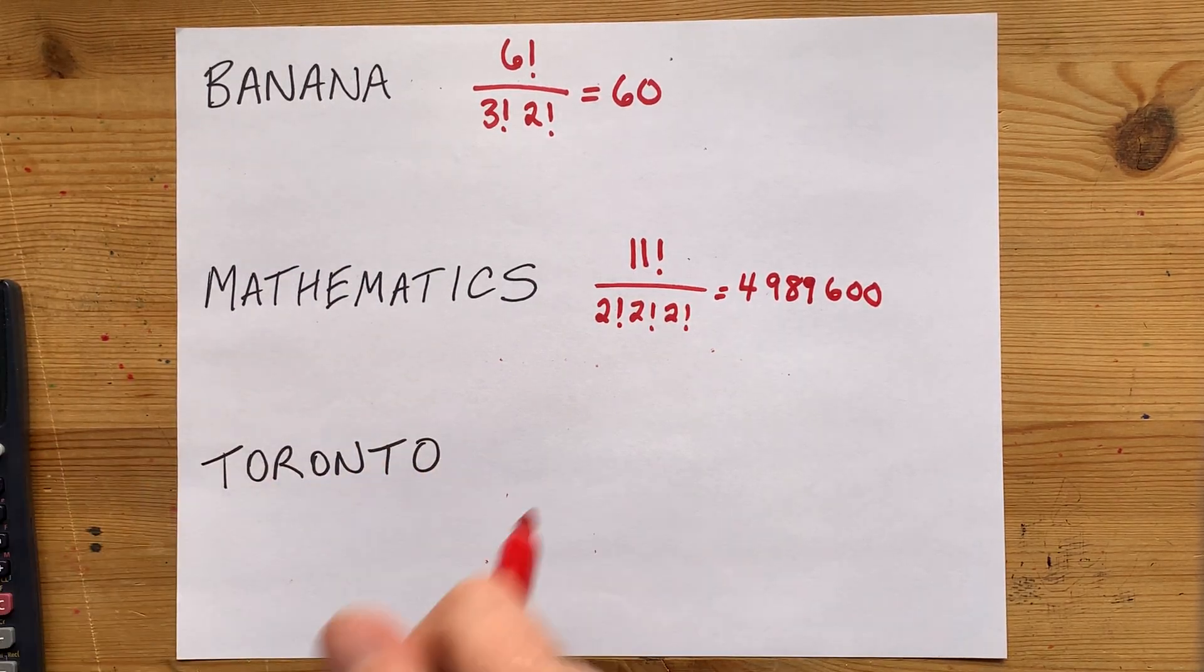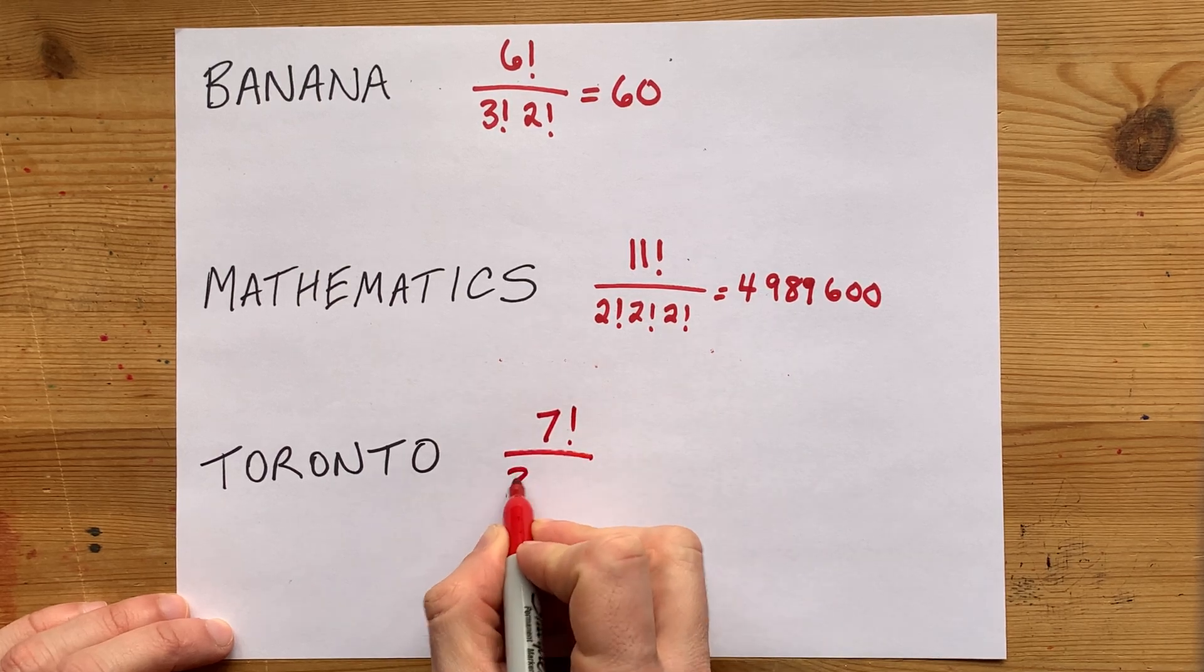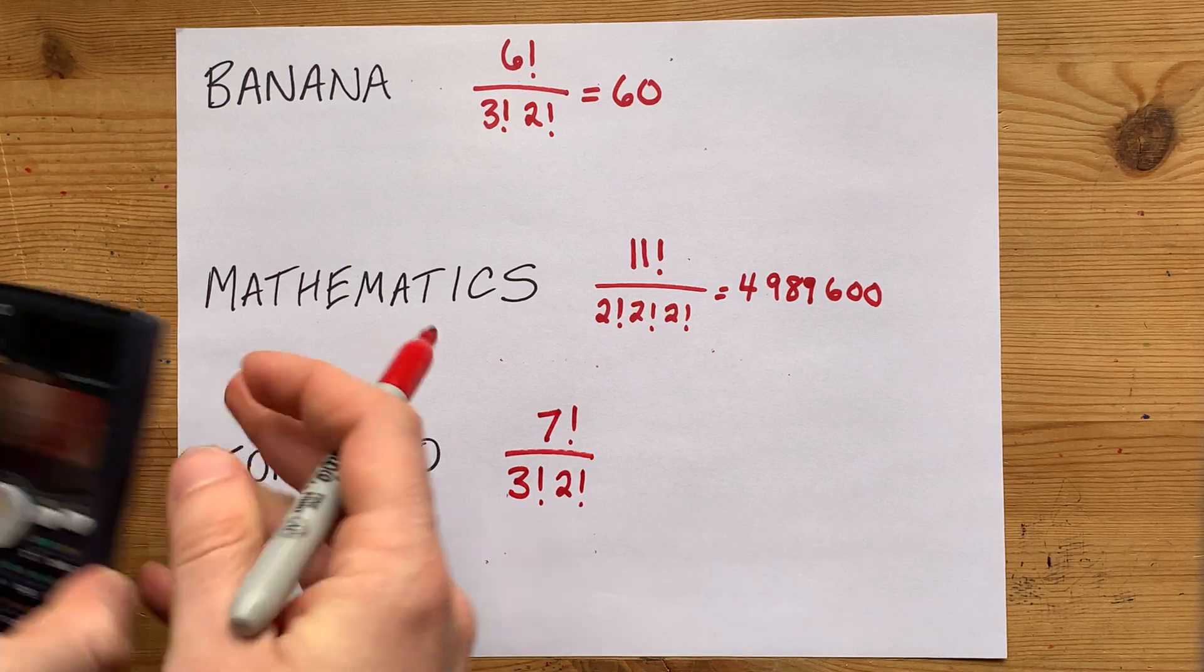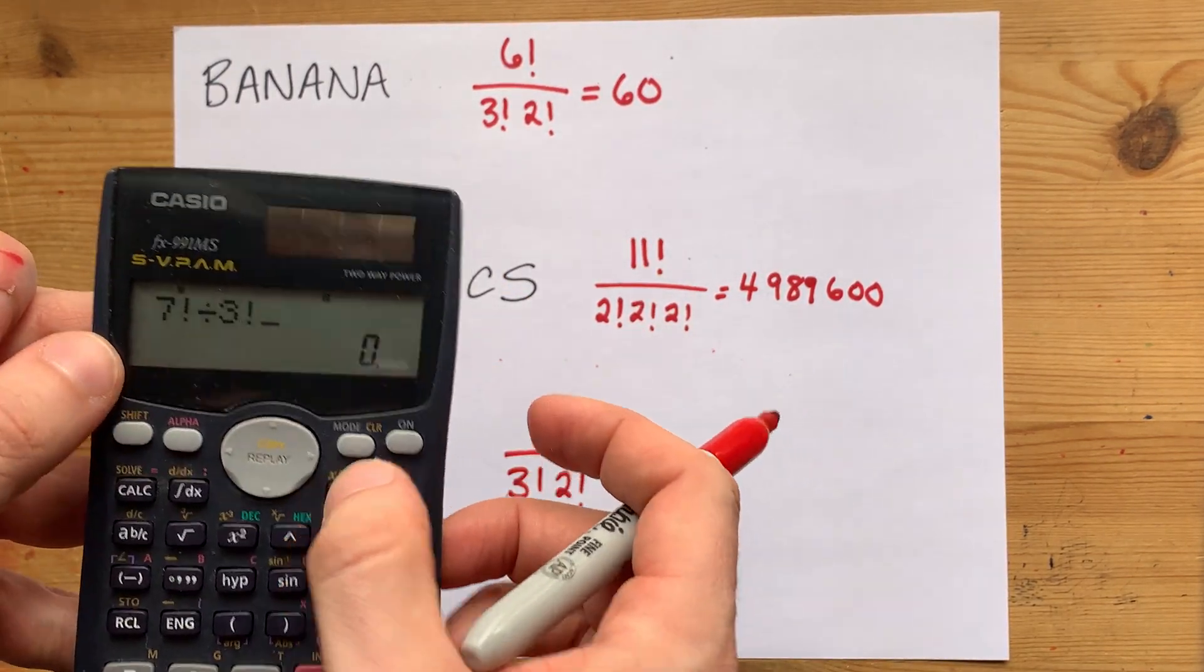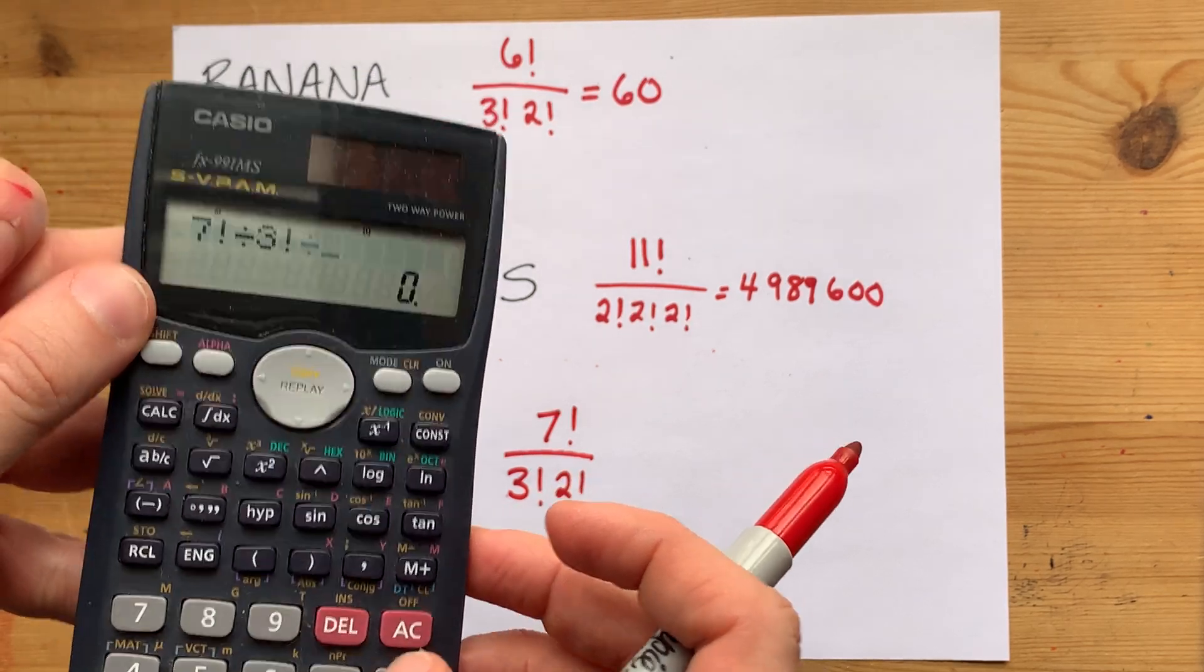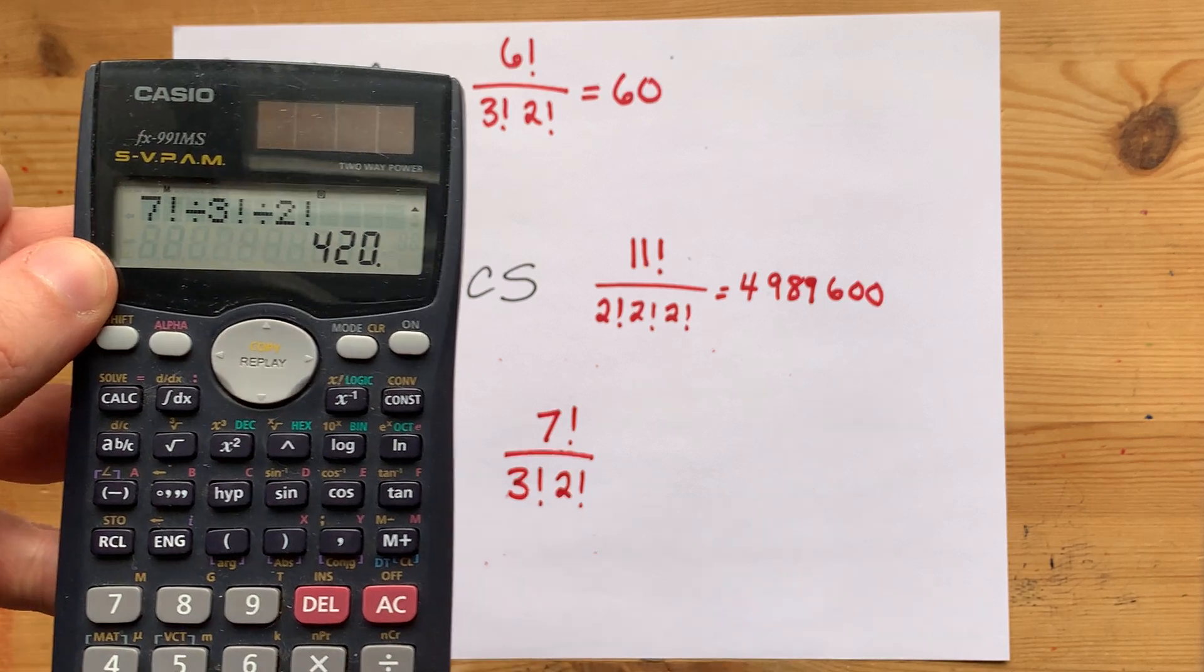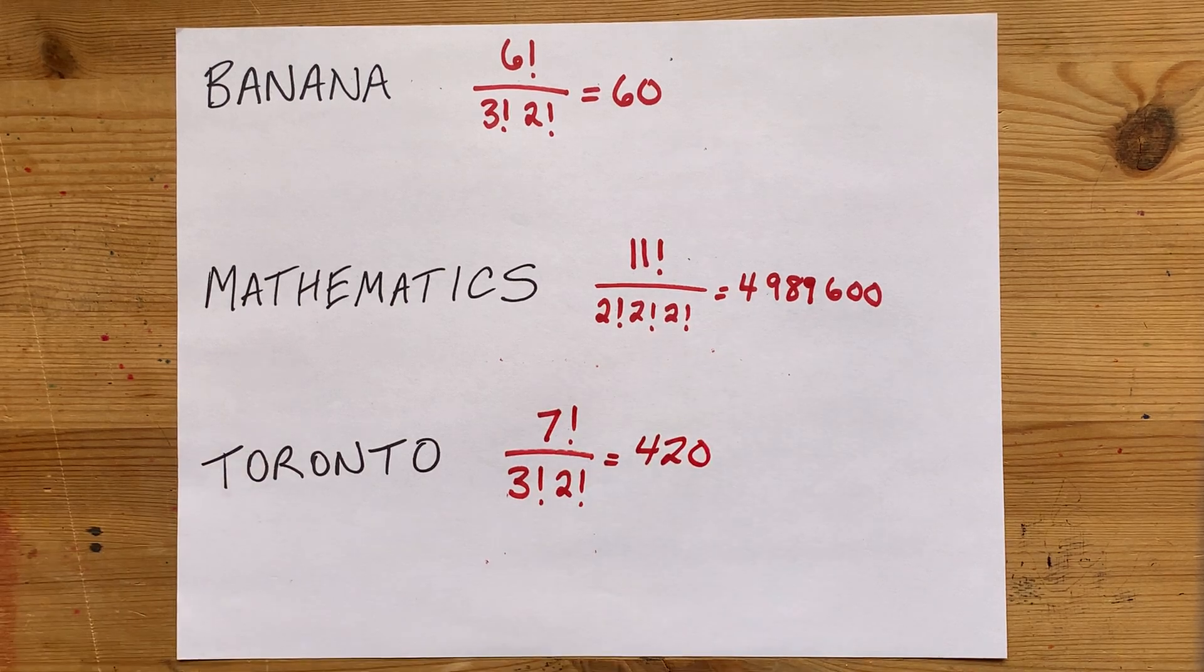And lastly, let's do TORONTO, a seven-letter word that has three O's and two T's. Look how quick this is once you know the pattern. Seven factorial divided by three factorial for the O's, and divided by another two factorial for the T's. That's four hundred and twenty ways to rearrange the letters of Toronto.